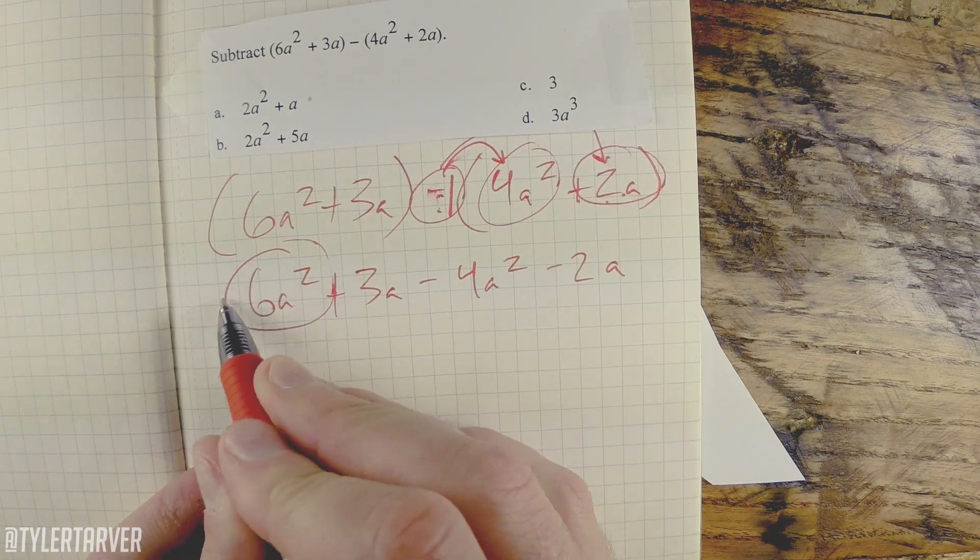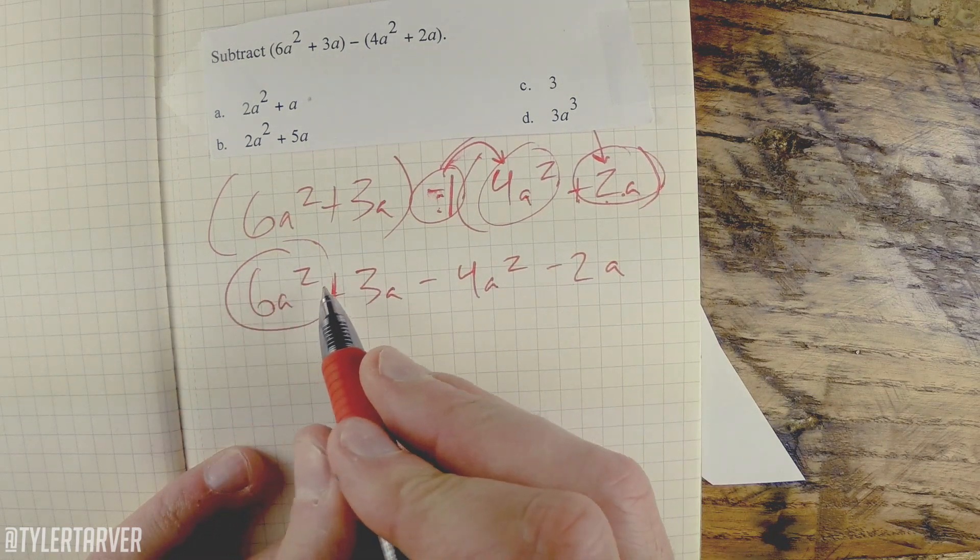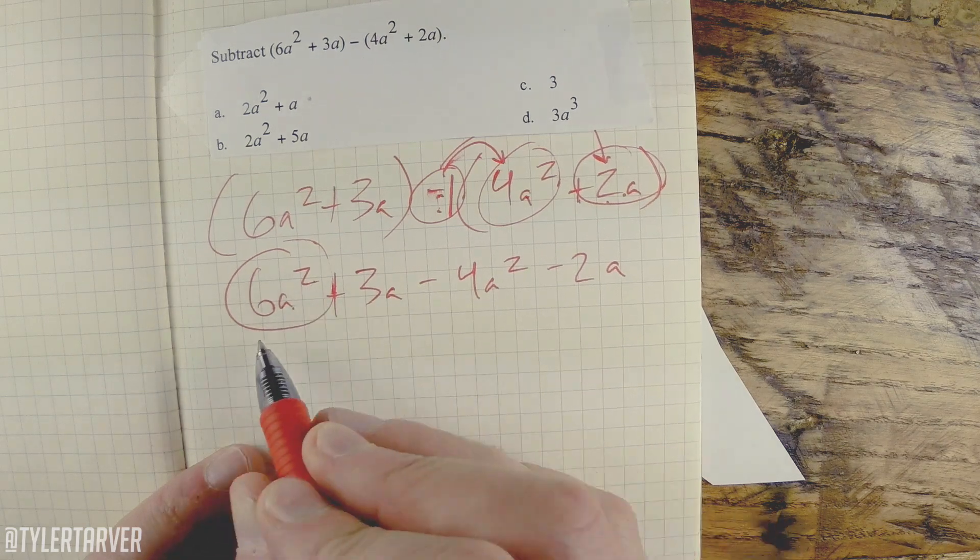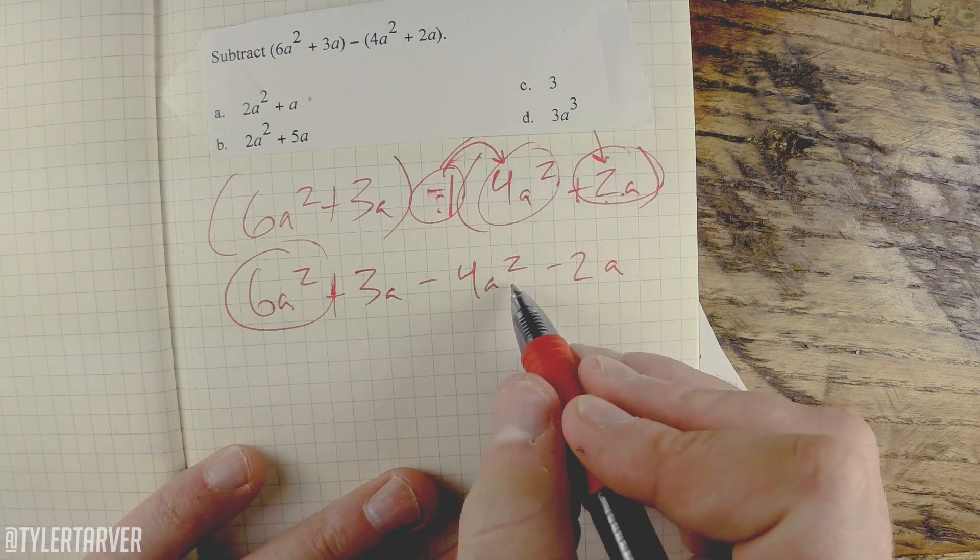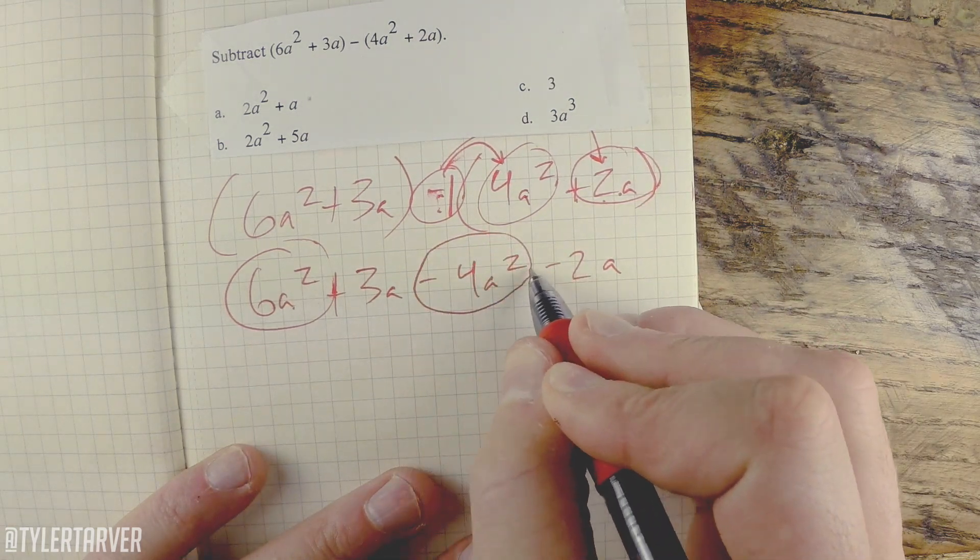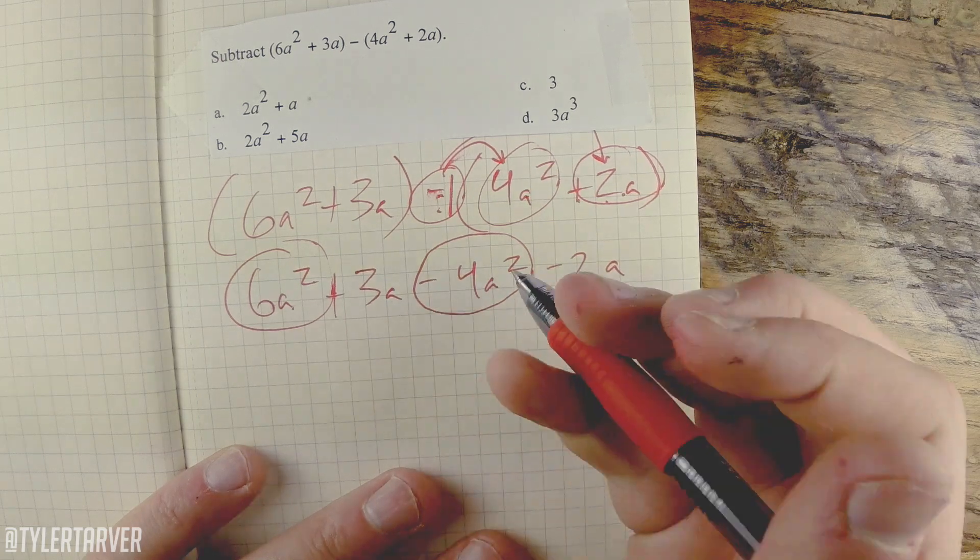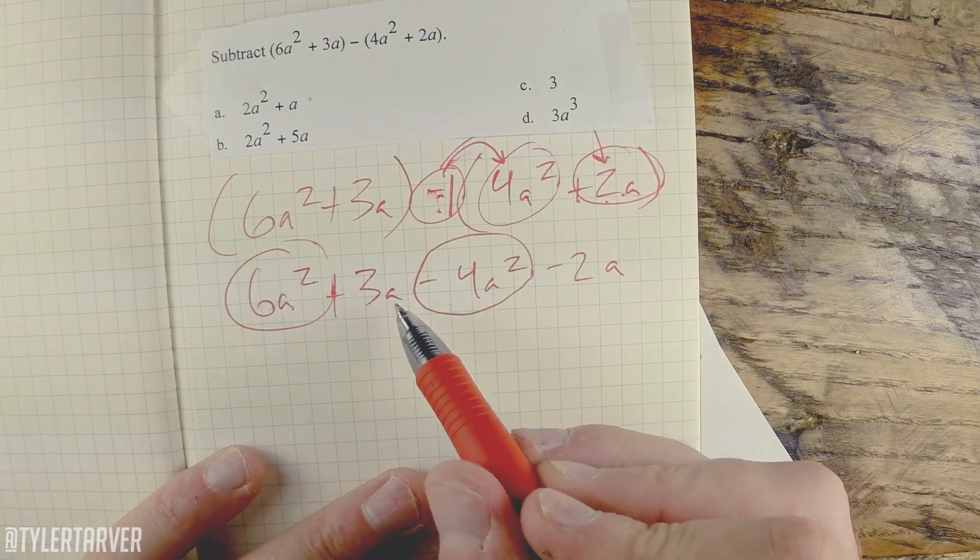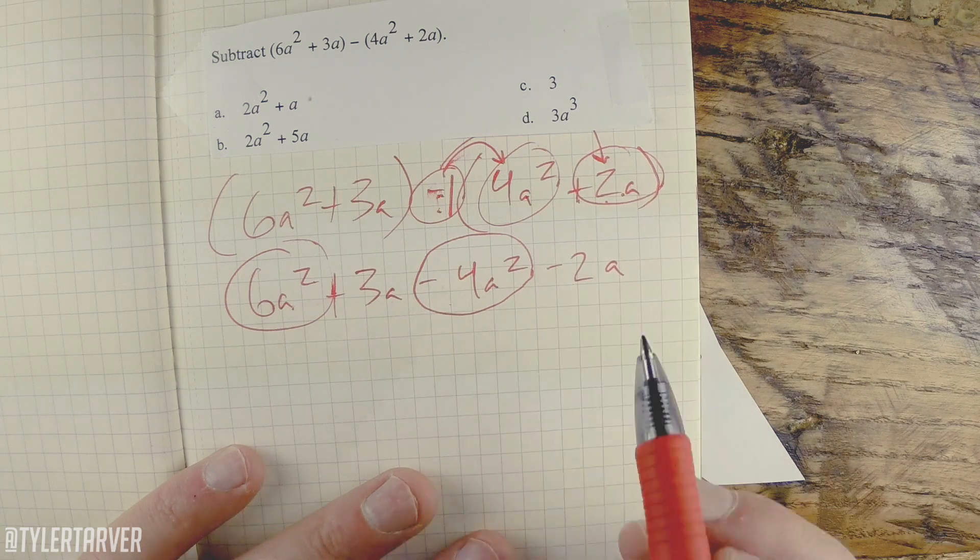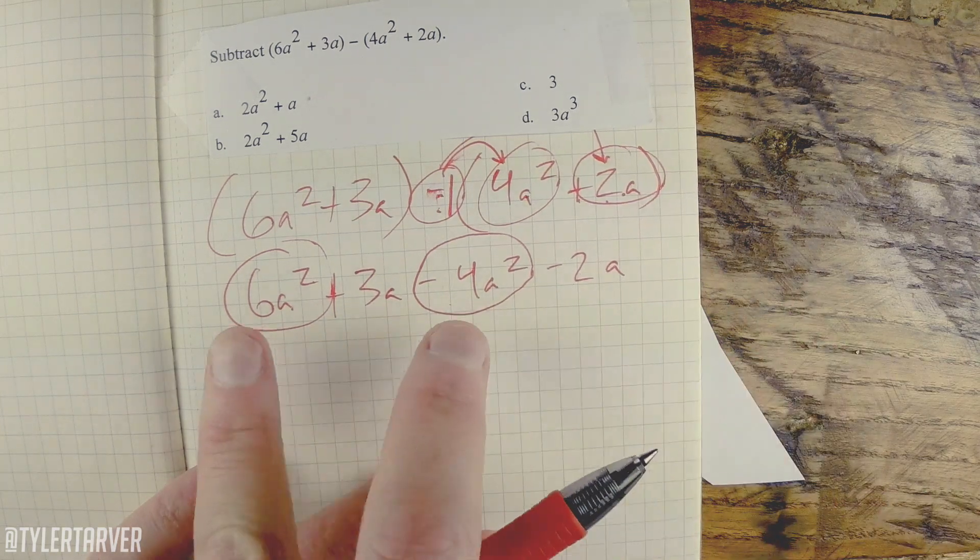So the only thing we can add this positive 6a² to is the stuff that has an a². We go across... that's just an a. Can't do that. Oh, a²! So I'm going to circle it and I'm not going to leave out the sign in front of it. A lot of people just circle it and think that negative doesn't need to join anybody. No, he needs a friend.